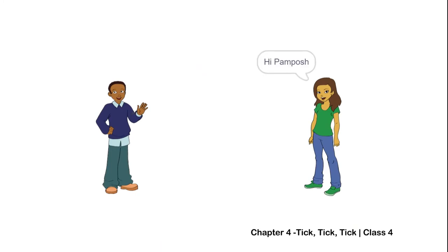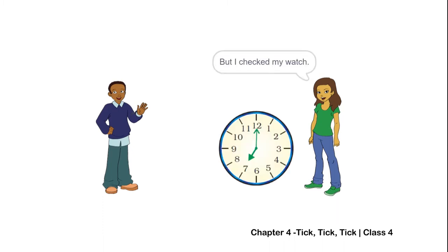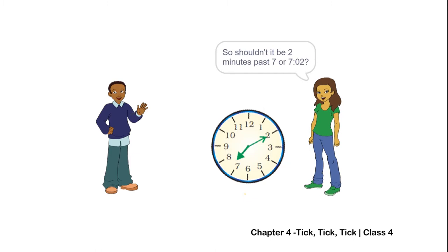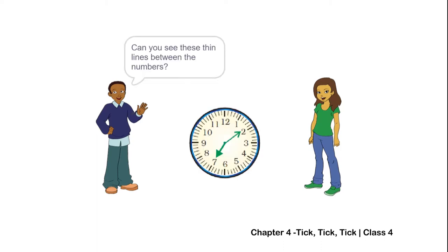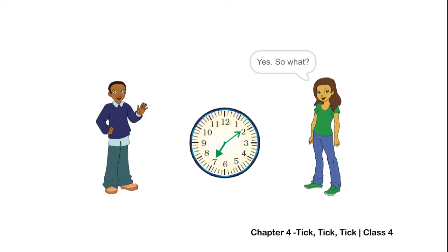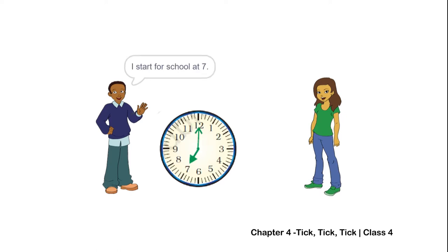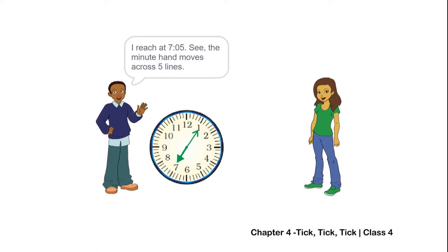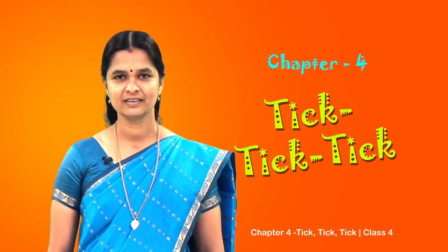Hi Shazia! Hi Pamposh! You know, I have to walk for five minutes to reach school. I just walk for two minutes to reach school. Impossible - your home is farther from school! But I check my watch. I start for school at seven o'clock. When I reach school the minute hand points at two, so shouldn't it be two minutes past seven, or seven two? You are wrong - you reach school at seven ten. How can you? See these thin lines between the numbers. So what? The minute hand moves across ten lines after twelve, so it is ten minutes past seven, or seven ten. I start for school at seven, I reach at seven five - the minute hand moves across five lines. Bye Shazia! Thank you, and bye Pamposh! Did you notice why Shazia was wrong?